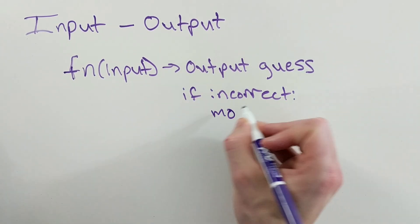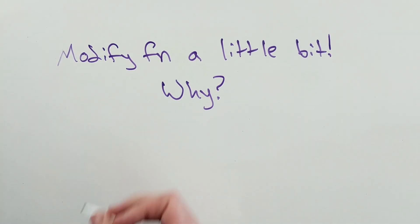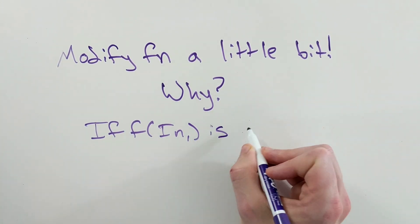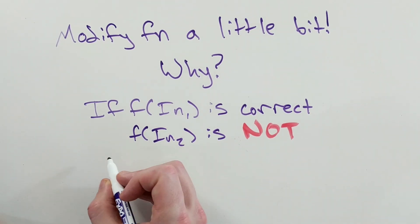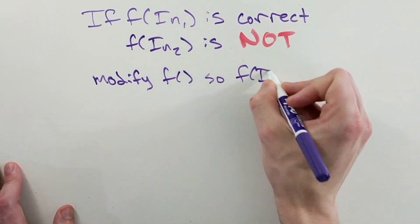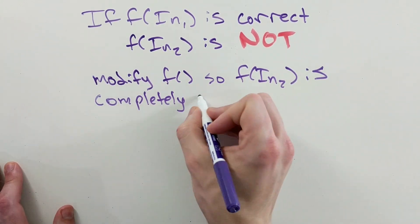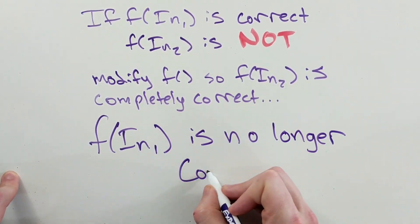Why modify just a little bit? Why not just modify the function so that it automatically predicts the output given the input? Well, if we do that for every example, what ends up happening is that we'll just forget the previous example and memorize the current one, which ultimately means we're not going to learn anything.